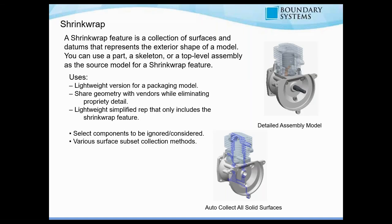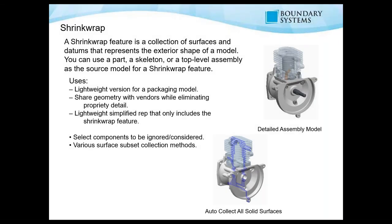The second tool I wanted to discuss is the shrink wrap. A shrink wrap feature is a collection of surfaces and datums that represent the exterior shape of a model. You can use a part, skeleton, or top of an assembly as the source for a shrink wrap feature. This is a handy tool when you're working in a large assembly and your machine is too slow and you need to free up some resources.